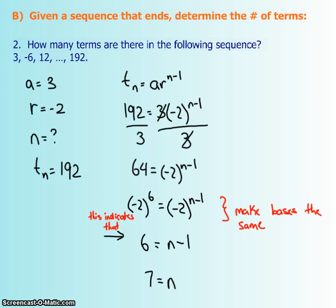The next type of question that we saw was given a sequence that ends. So remember, we have an ending number. Tell me how many numbers are in that sequence. So we know the first term, the second term, the third term, but I don't know what that is. That's the Nth term. So we're going to put that as the Nth term. That's the term value for the Nth term. We don't know what N is. We know what the first term is. It looks like it's 3, and it also looks like it's multiplying negative 2 each time. So I get my R as negative 2.